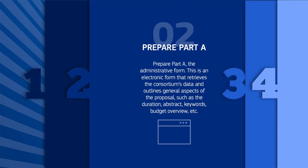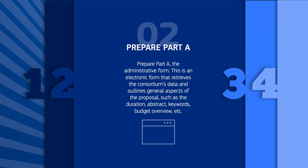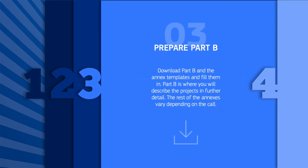Phase two: prepare Part A, the administrative form. This is an electronic form that retrieves the consortium's data and outlines general aspects of the proposal, such as the duration, abstract, keywords, budget overview, etc. Phase three: download Part B and the annex templates.